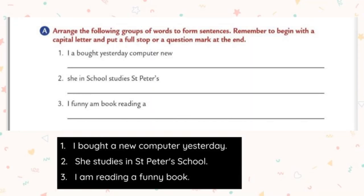The third one: 'I funny am book reading a.' We change this into the complete sentence: 'I am reading a funny book.' The letter I should be in capital. Put a full stop at the end of the sentence.